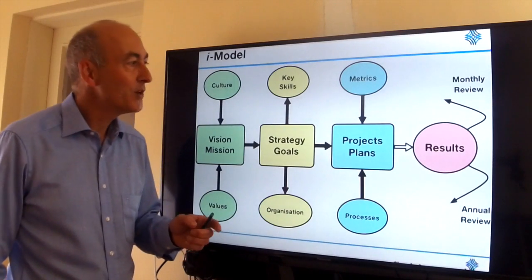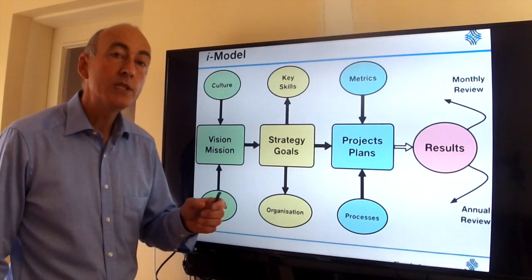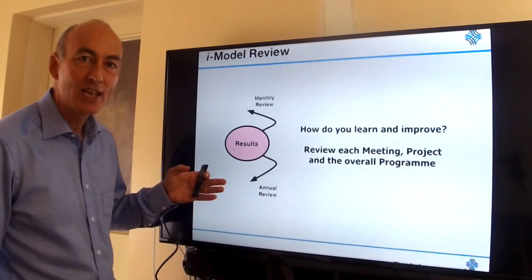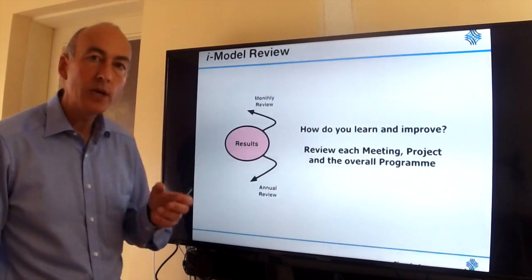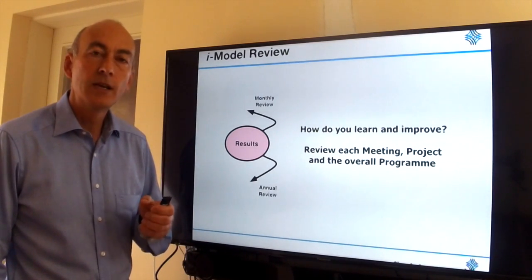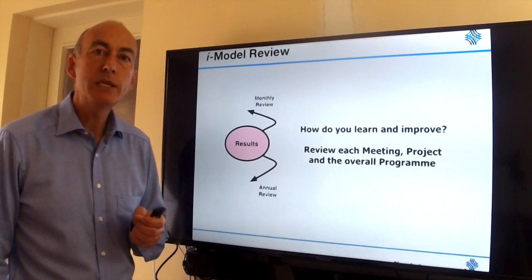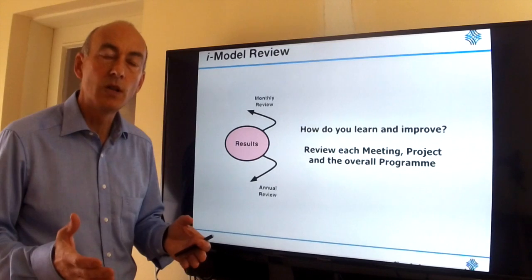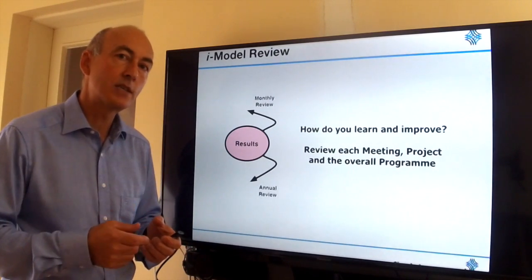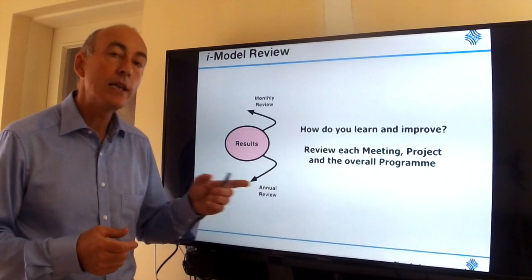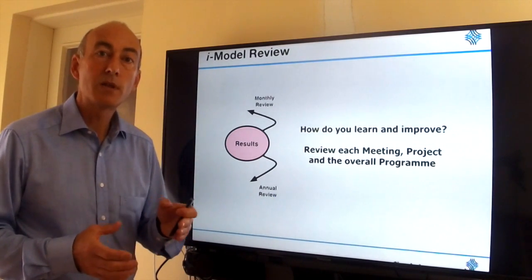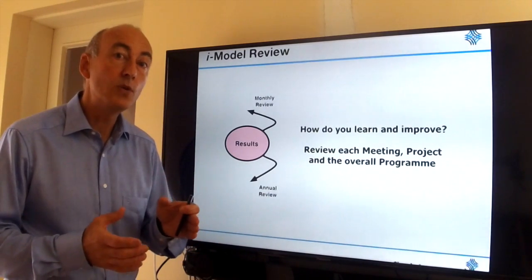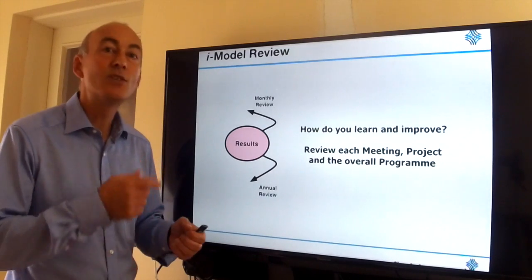Let's finish off by looking at the last segment of the I Model, which is about results, reviewing, and learning — in effect, the insect's head. The question is: how do you learn and improve? You should be reviewing each meeting, conducting a wrap-up at the end of each meeting and conference call so you can learn how to make it better next time. Every project should be reviewed, and you should be reviewing your program of projects on a monthly basis at least — that discipline of regular review really helps you build improvement into your improvement program.